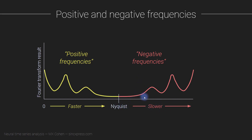These are called the negative frequencies — the frequencies above the Nyquist frequency. Because they get aliased into slower frequencies, we don't number them as being faster above the Nyquist. Instead, we start counting these in hertz going back down towards zero and attaching a negative sign to them. For example, if a peak in the spectrum is at 10 hertz and another is at 20 hertz, then the mirrored peaks would be minus 20 hertz and minus 10 hertz, going all the way down to minus one hertz.